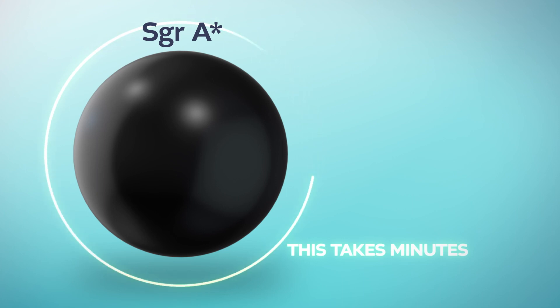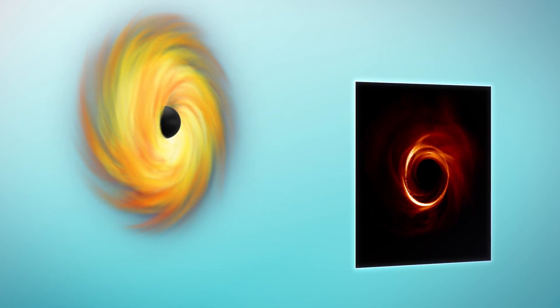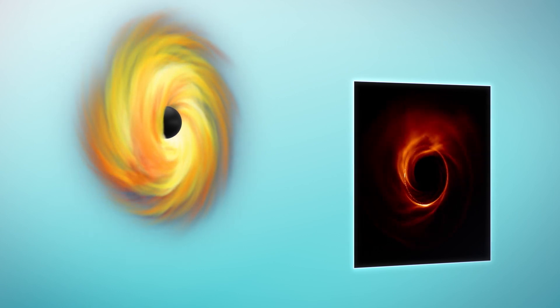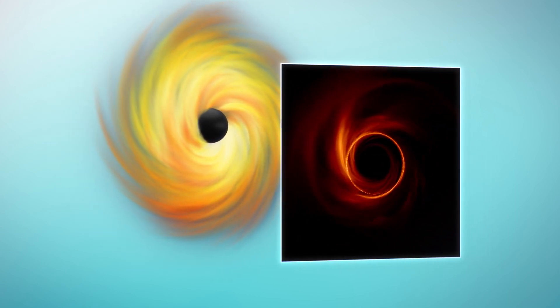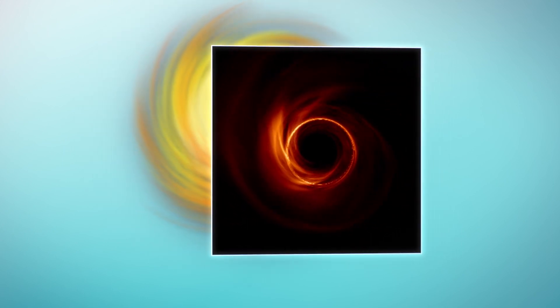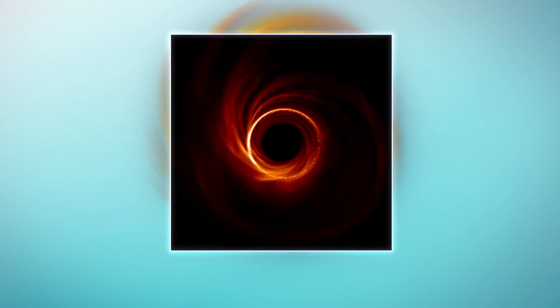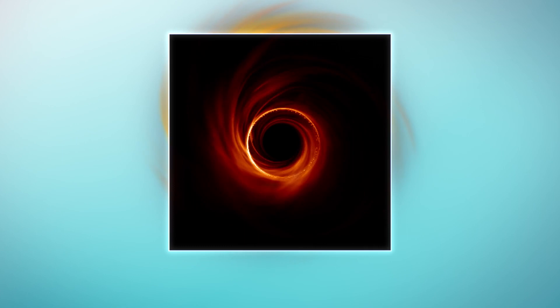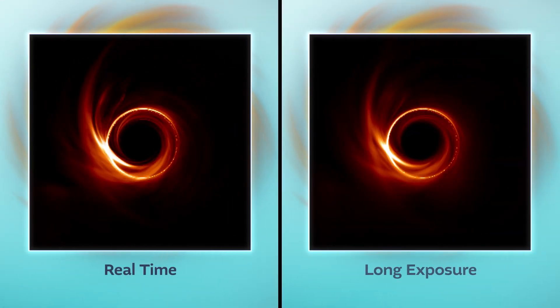The radio light that the EHT observes from Sagittarius A star is emitted by the hot gas orbiting around it at close to the speed of light. Because it takes several hours over the course of a night for the EHT to collect enough data to make an image, the appearance of Sagittarius A star is changing even as we're trying to image it.